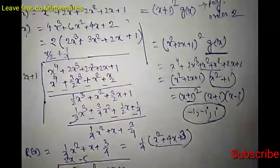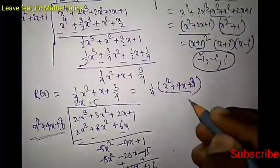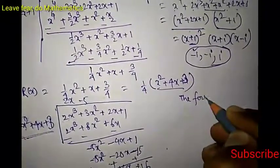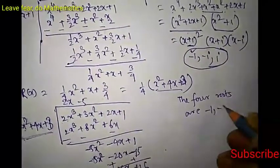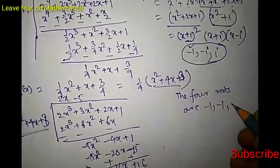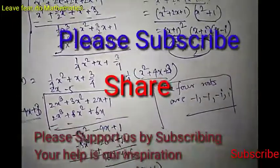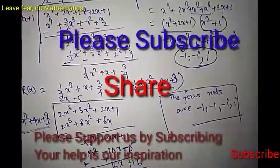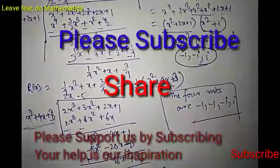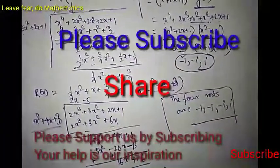So the four roots are: −1 is a multiple root of order 2 (counted twice), and the remaining roots are −i and i. Thank you friends for watching the video. If you like this video, please subscribe to the channel and share it with your friends. Please stay tuned and don't forget to share and subscribe. Thank you.